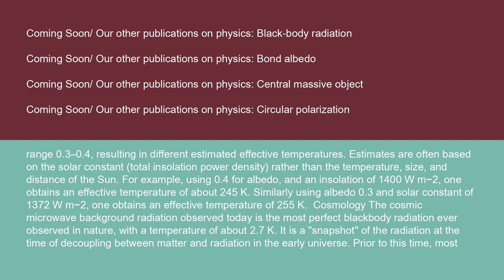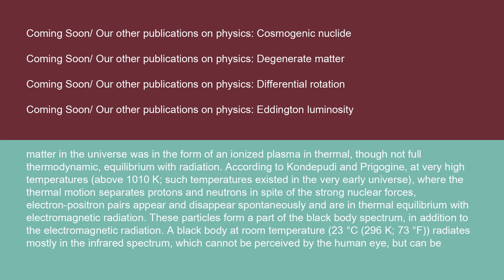Cosmology: the cosmic microwave background radiation observed today is the most perfect blackbody radiation ever observed in nature, with a temperature of about 2.7 K. It is a snapshot of the radiation at the time of decoupling between matter and radiation in the early universe. Prior to this time, most matter in the universe was in the form of an ionized plasma in thermal, though not full thermodynamic, equilibrium with radiation.